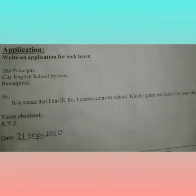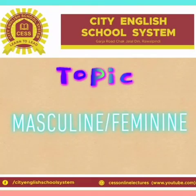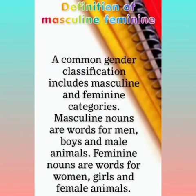The second topic is Masculine and Feminine — meaning what masculine and feminine are. The feminine noun is used for women and female animals.